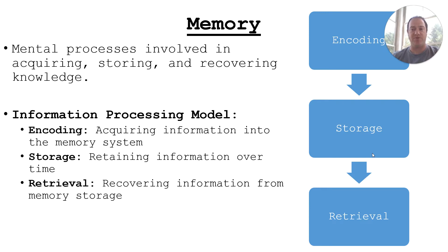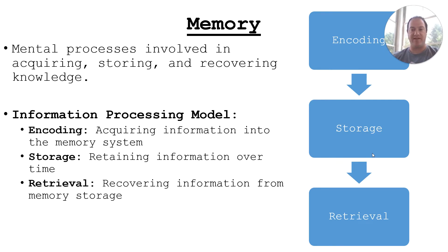The analogy I use is a computer file. When you're typing a Word document, all the information you're entering is encoding. When you save it to your desktop, folder, or USB drive — that's storage. When you open it back up the next day, that's retrieval. It's a simplified model, but that's basically how memory works: we experience the information, move it to storage, and then retrieve it into conscious awareness.